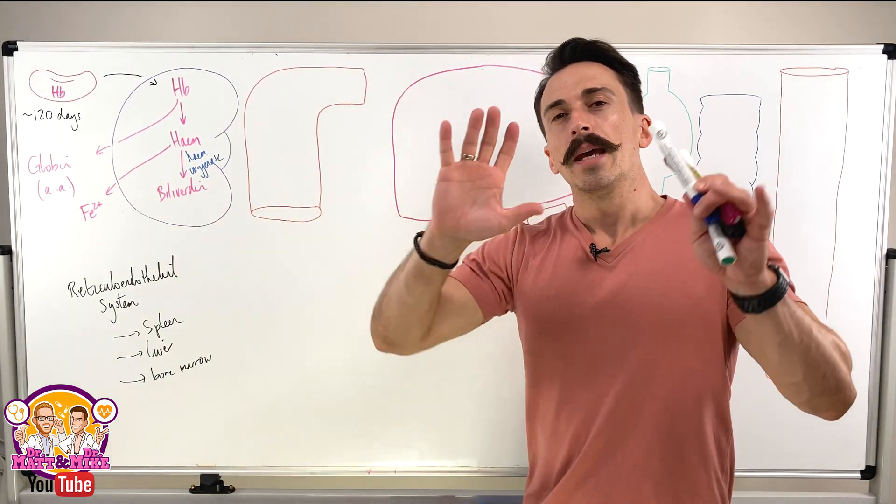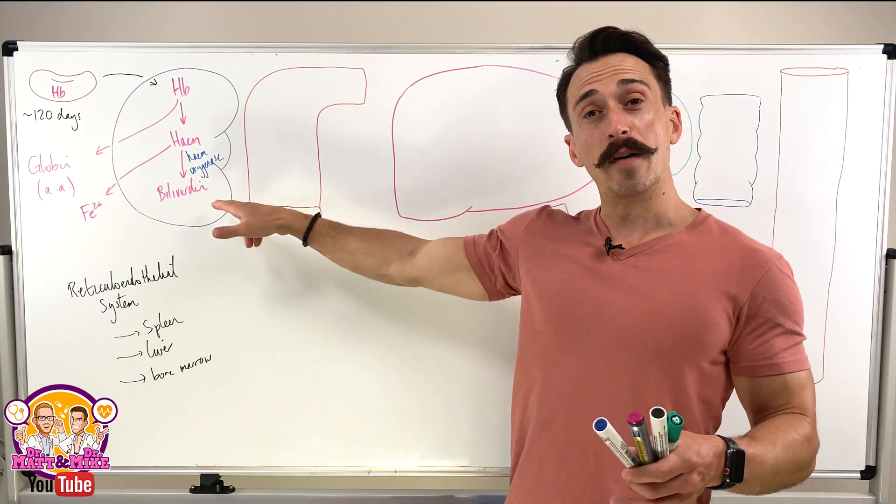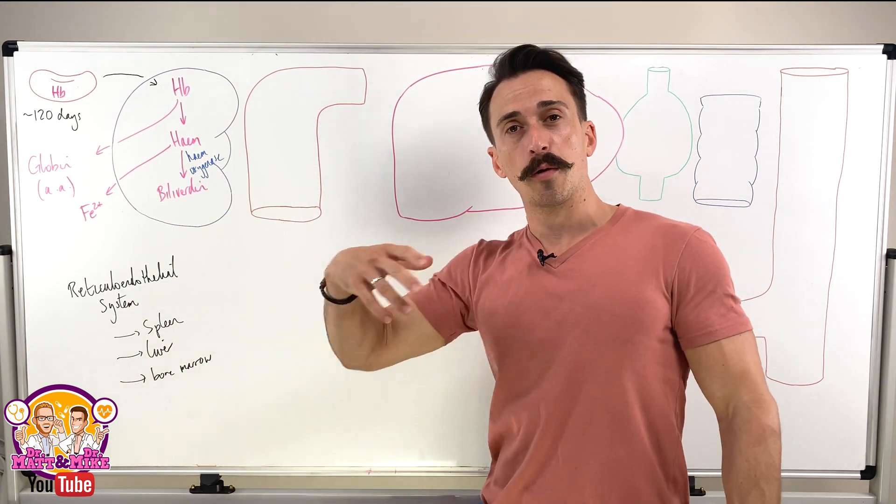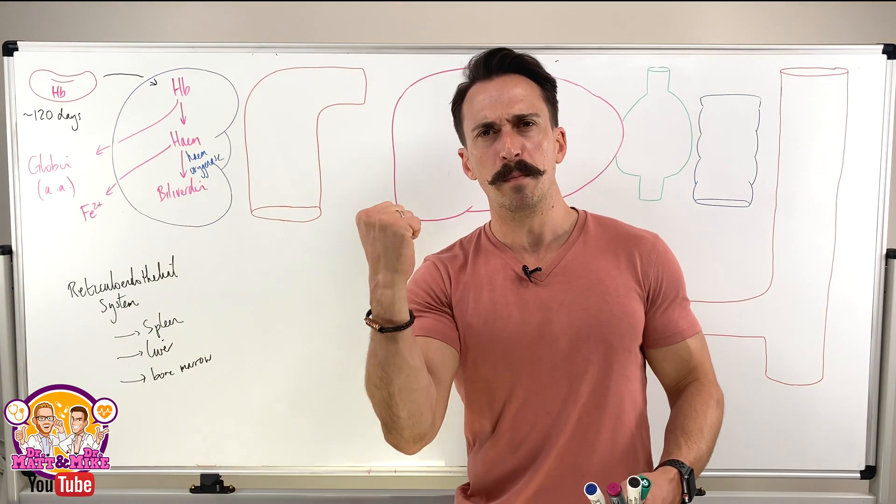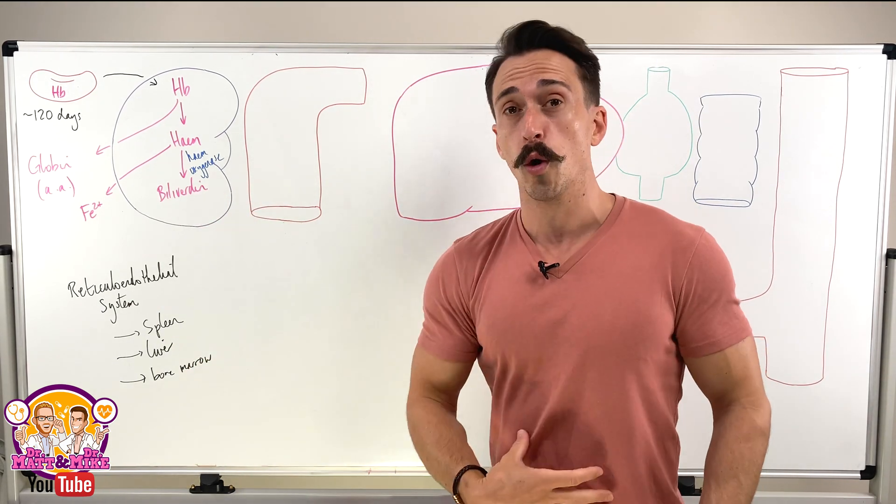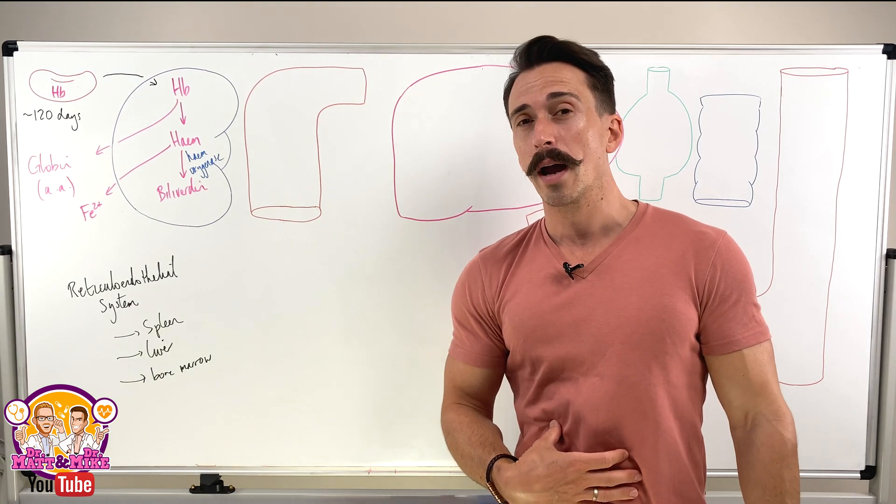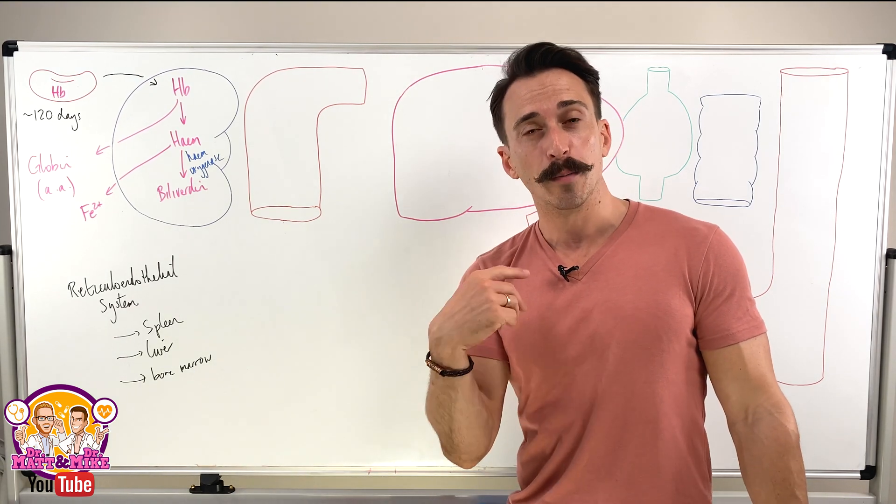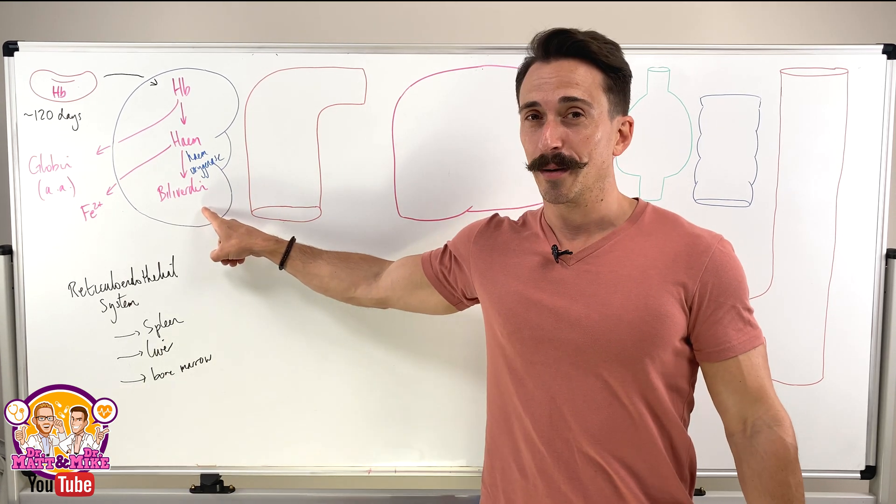So now we've got biliverdin. If we were a bird or a reptile or an amphibian, that would be fine. We could actually excrete biliverdin through our poo or our pee. But we're not a bird, a reptile or an amphibian. We are human beings, dammit. And what that means is we have babies within our womb and they require a placenta.